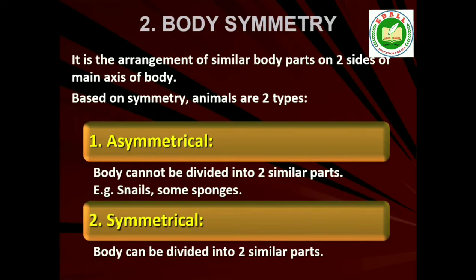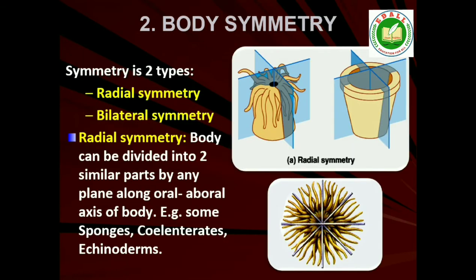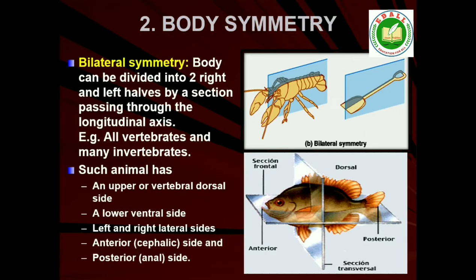2. Symmetry. Animals can be categorized on the basis of their symmetry. Sponges are mostly asymmetrical, that is, any plane that passes through the center does not divide them into equal halves. When any plane passing through the central axis of the body divides the organism into two identical halves, it is called radial symmetry. Coelenterates, ctenophores and echinoderms have this kind of body plan. Animals like annelids, arthropods, etc., where the body can be divided into identical left and right halves in only one plane, exhibit bilateral symmetry.